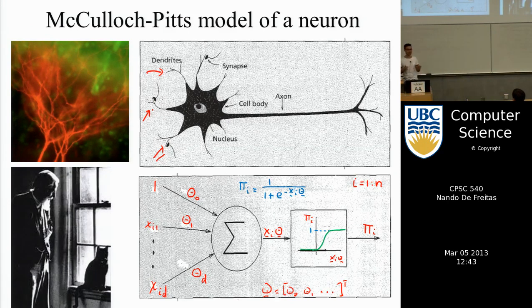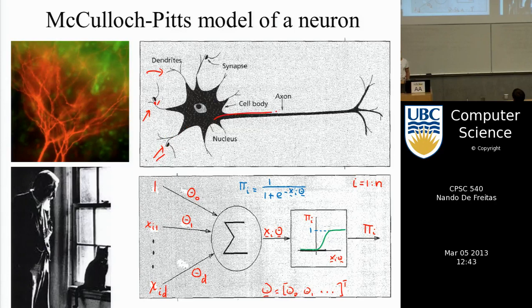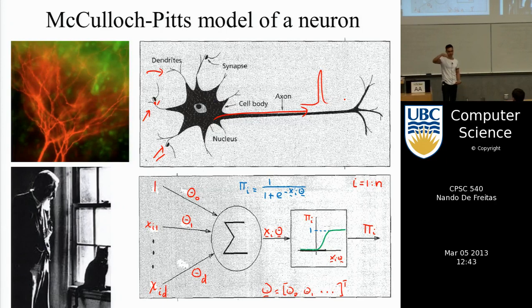Depending on how many neurotransmitters you have floating between the connections of two cells — and neurotransmitters are the things you disrupt when you take drugs, because you're basically altering these connections — the membrane polarizes with ions, positive and negative, allowing a pulse to be transmitted along the gap. When all those pulses reach a certain level of excitation in the cell, the cell fires a pulse. Instead of dealing with pulses individually, think of a frequency-modulated signal: we take an average of those pulses, which gives us the level of excitation of the cell.